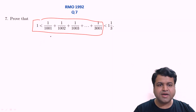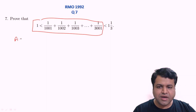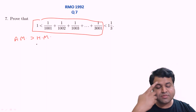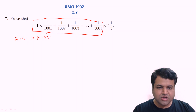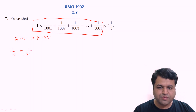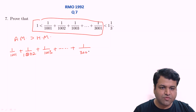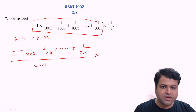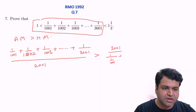Notice that the reciprocals of the terms form an AP, so this series is clearly an HP with 2001 terms (from 1/1001 to 1/3001). We will apply the AM-HM inequality. Since all terms are distinct, it is strictly greater. The arithmetic mean of these 2001 terms — (1/1001 + 1/1002 + ... + 1/3001)/2001 — will be strictly greater than their harmonic mean, which is 2001 divided by the sum (1/1001 + 1/1002 + ... + 1/3001).